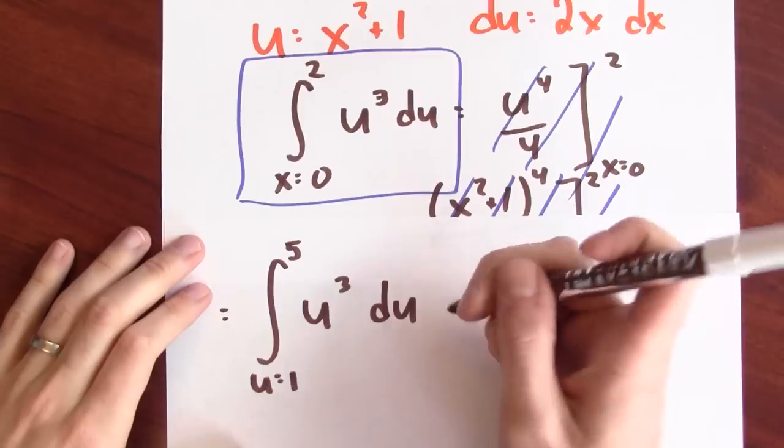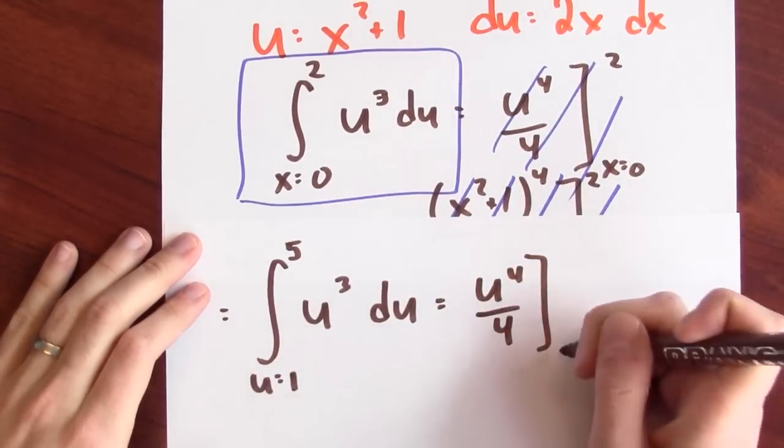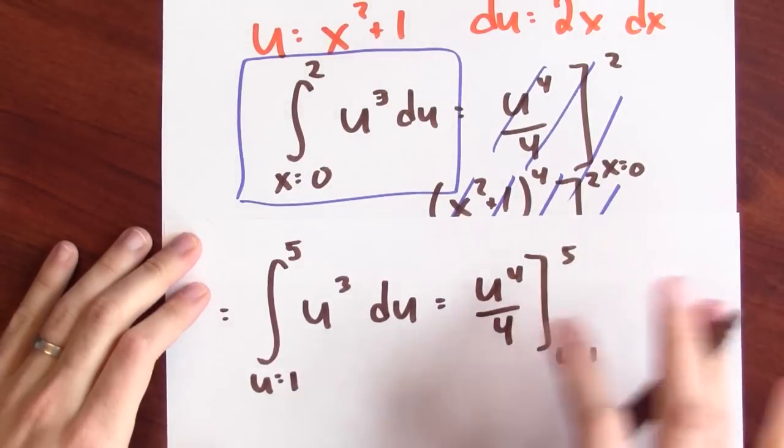So if I change the endpoints to be in terms of u, then I don't have to go back to x. Again, I know an antiderivative. It's u to the fourth over 4. And now I'm evaluating it at 5 and 1 in terms of u and taking the difference.